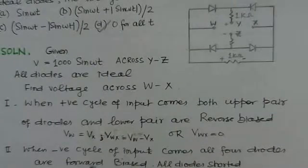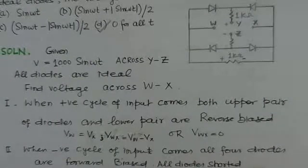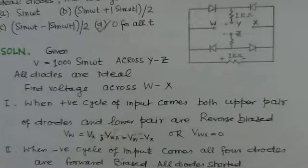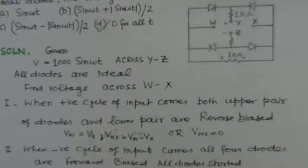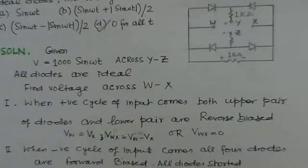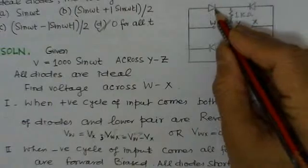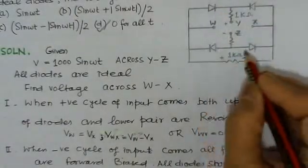Now, when the negative cycle of the input comes, all 4 diodes are forward biased. And once they are forward biased, being ideal, all diodes are shorted here. All these, these ends are all shorted.